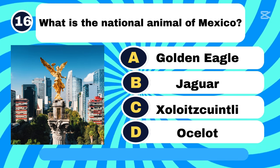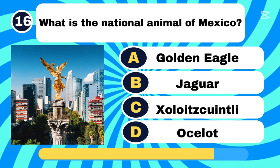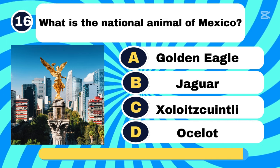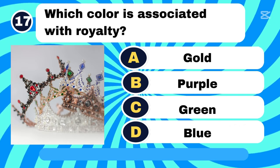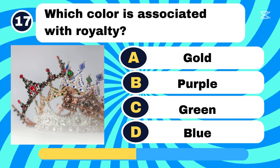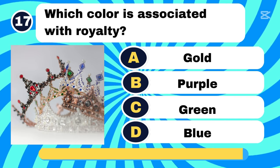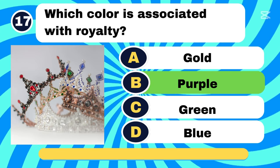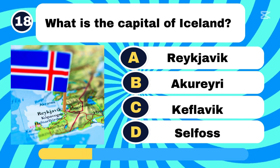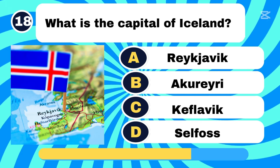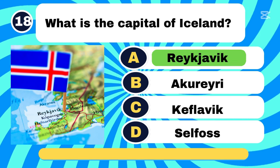What is the national animal of Mexico? Letter B, Jaguar. Which color is associated with royalty? Letter B. What is the capital of Iceland? Letter A, Reykjavik.